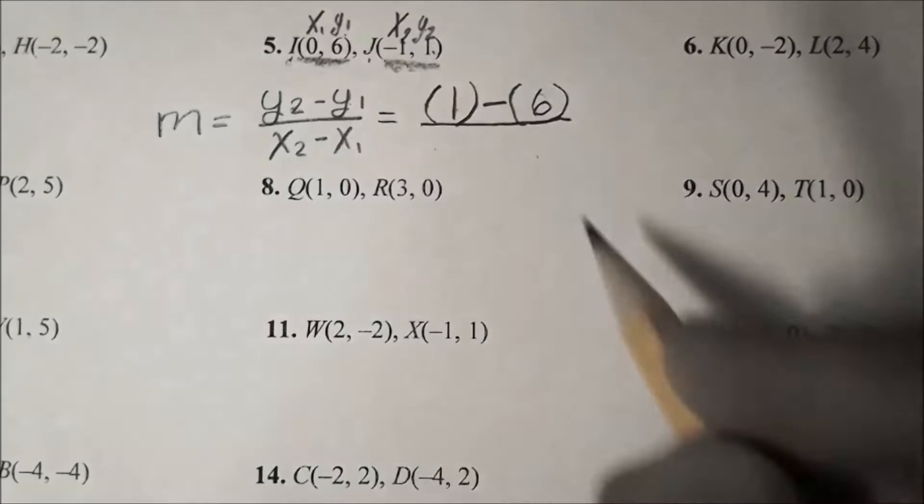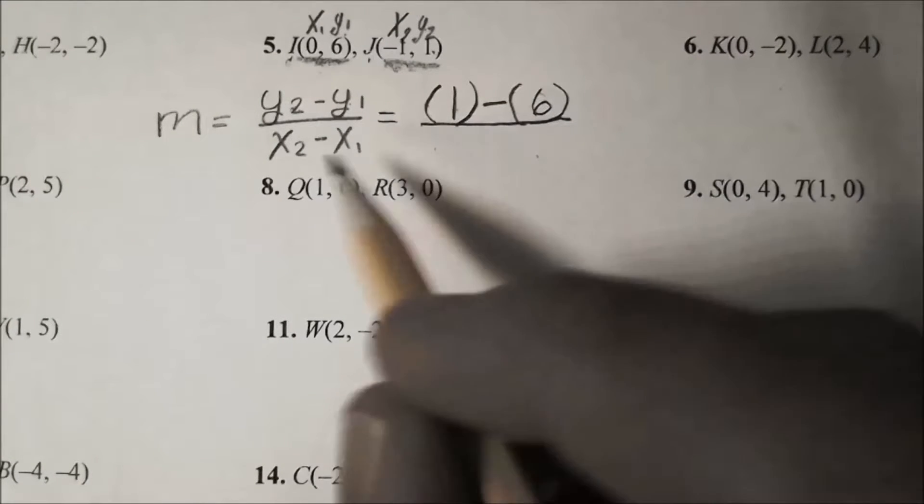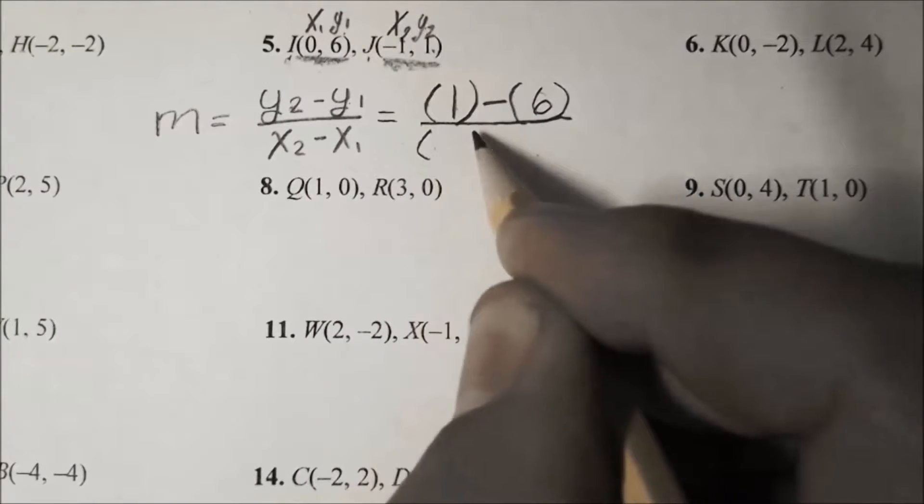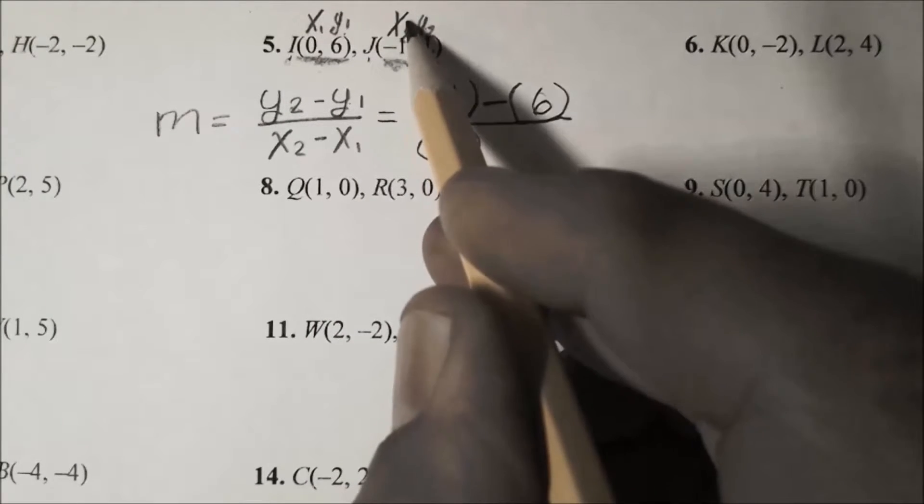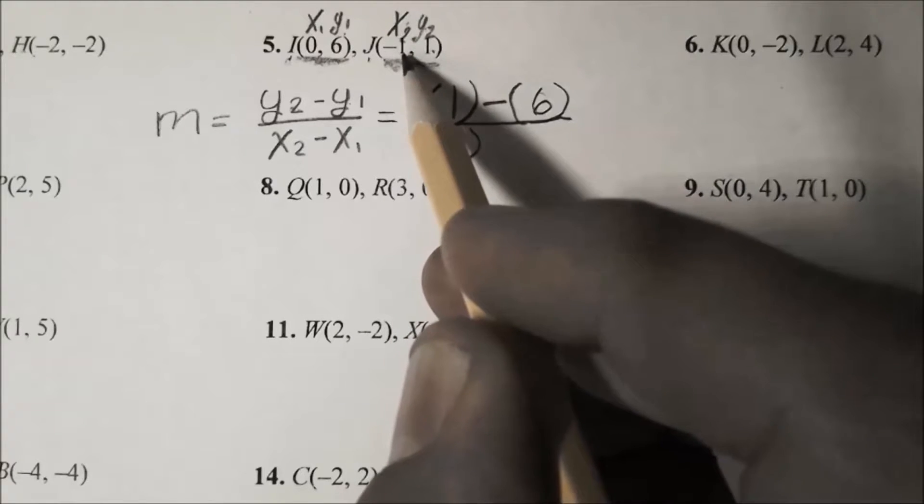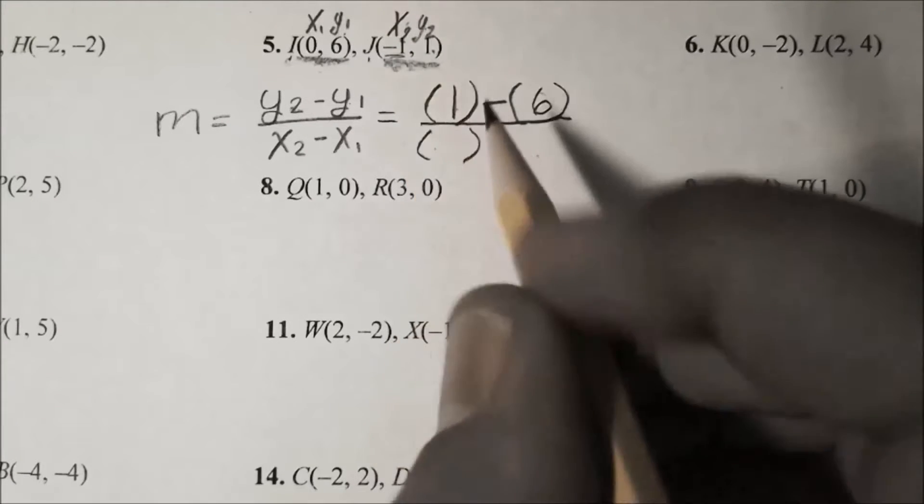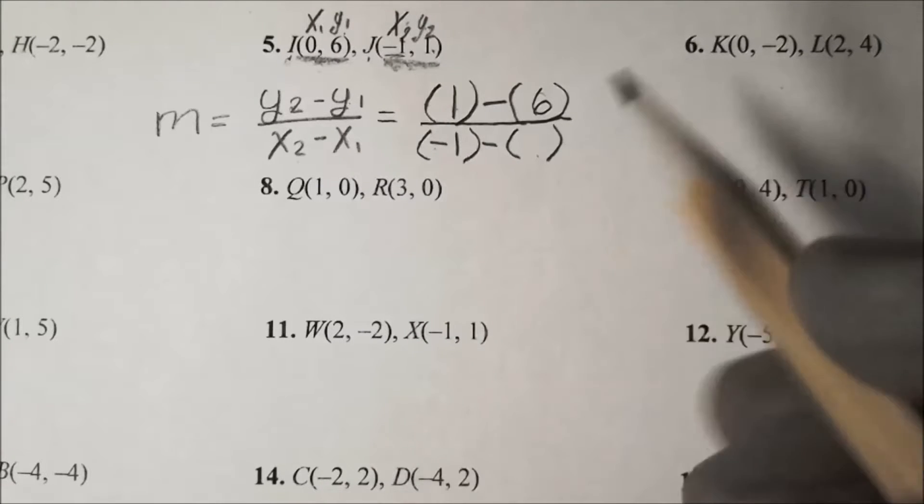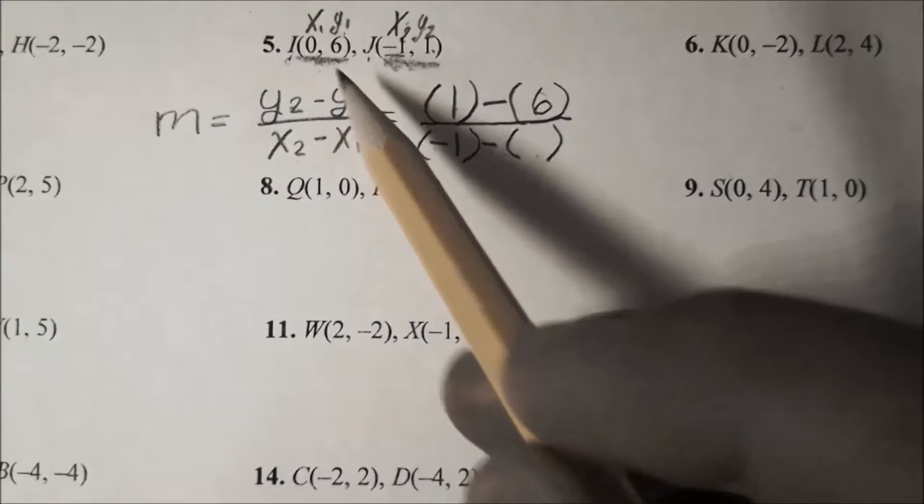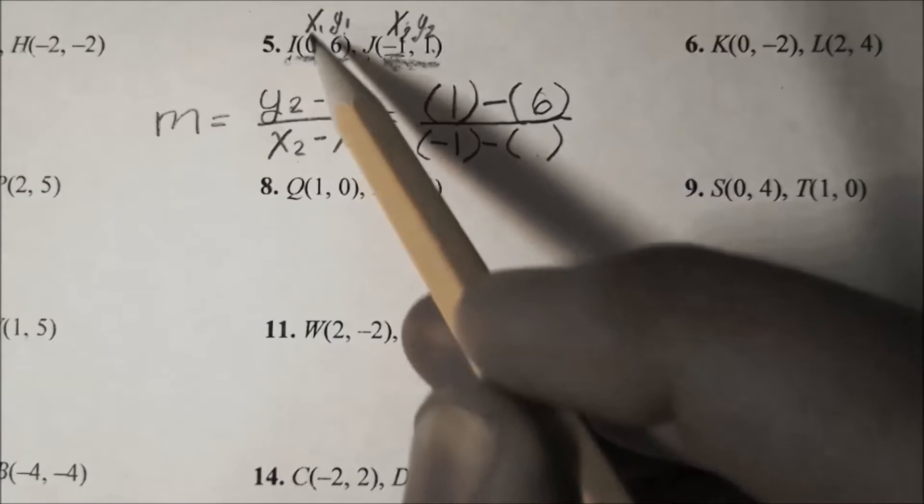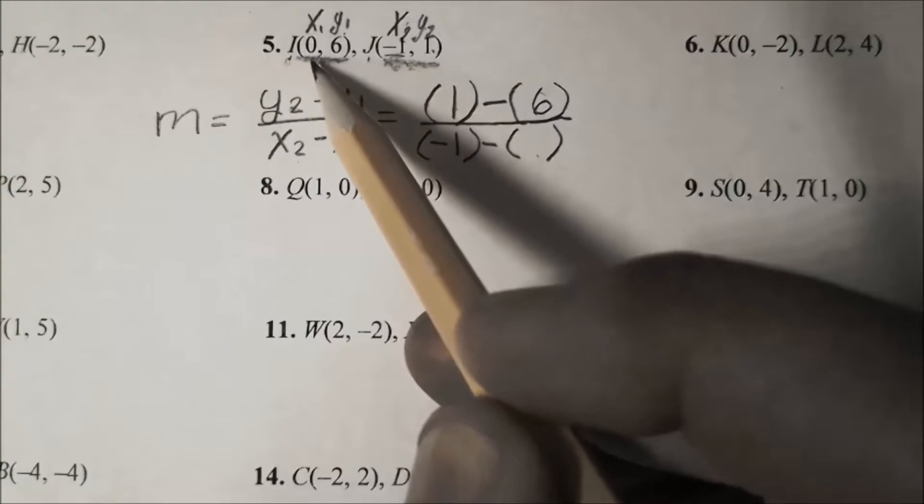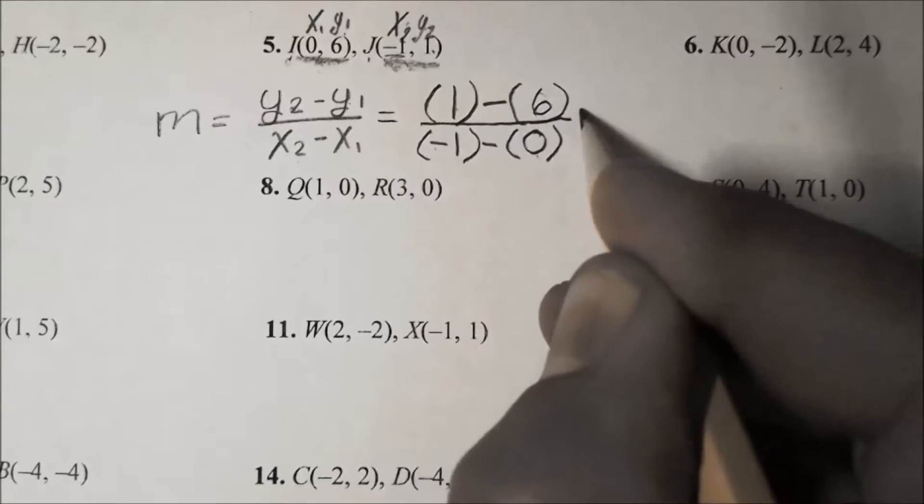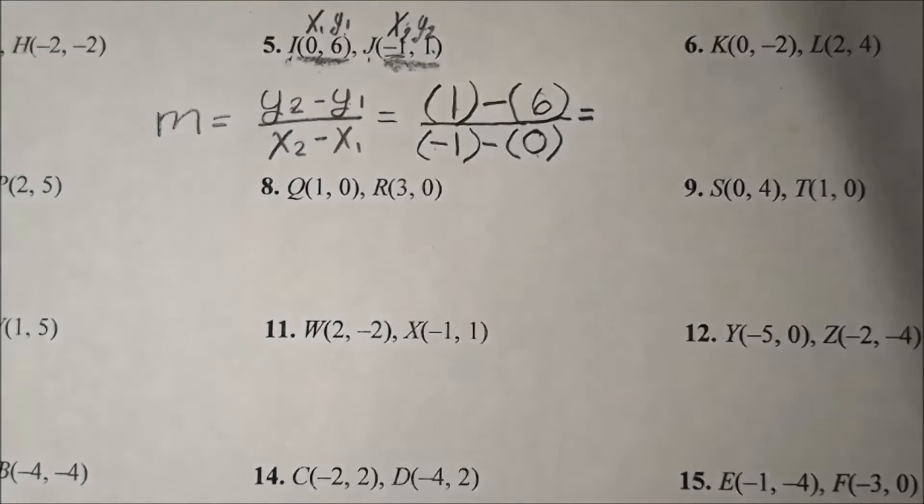Now we need to put our x₂. Our x sub 2 is right here, and that value is negative 1. I'm going to put negative 1 minus, and now I'm going to plug in my x₁, which is 0. I'm going to set that equal to. Now I'm going to use my calculator to put that in.